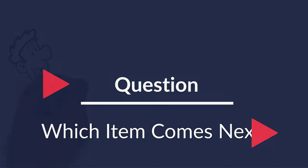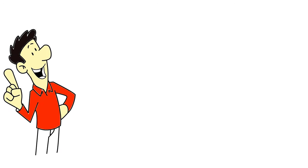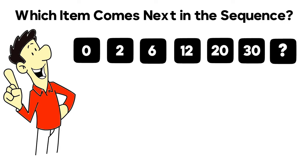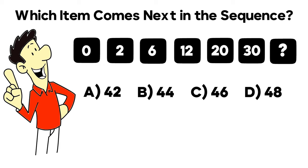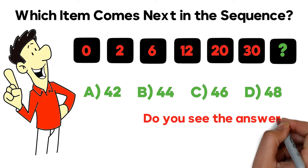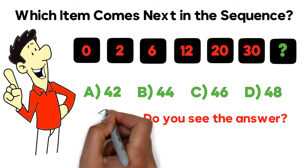Very frequently on the test you might be asked to detect the pattern. In this question we're asked which item comes next in the sequence. We're presented with a sequence of six visible items: 0, 2, 6, 12, 20, and 30, and the next item is missing. You're asked to select from four choices: choice A is 42, choice B is 44, choice C is 46, and choice D is 48.